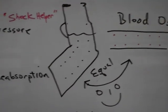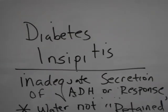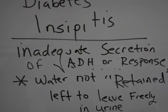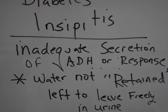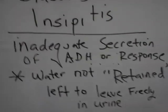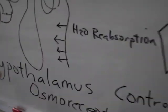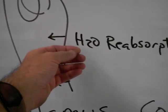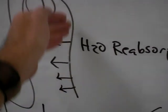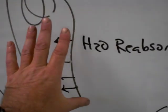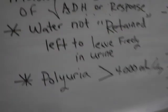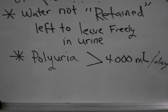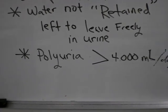If everything is working properly, osmolality is balanced. However, in diabetes insipidus there's either an inadequate secretion of antidiuretic hormone, or you make enough ADH but there's no response to it. In other words, plenty of ADH hormone to cause reabsorption of water, but the cells are not responding to the antidiuretic hormone. As a result, water is not retained and the patient is left to urinate freely.